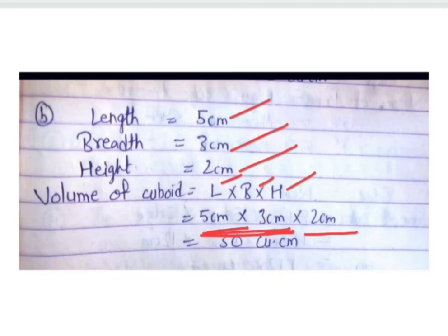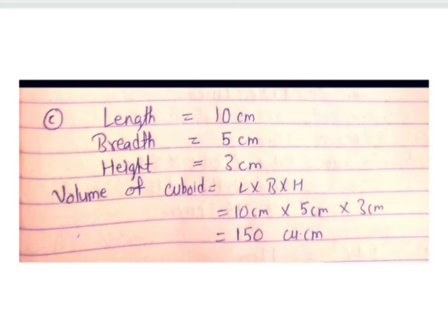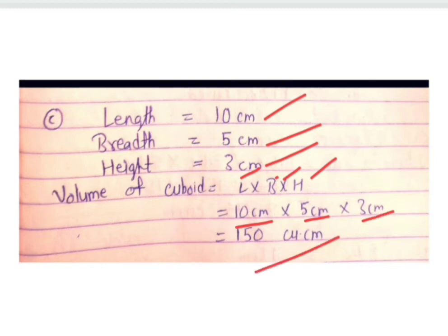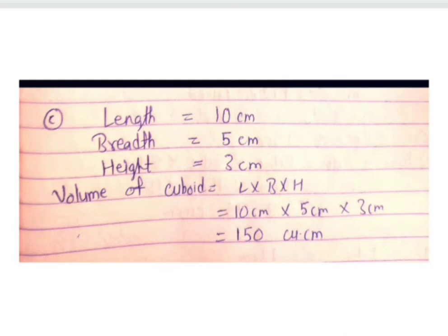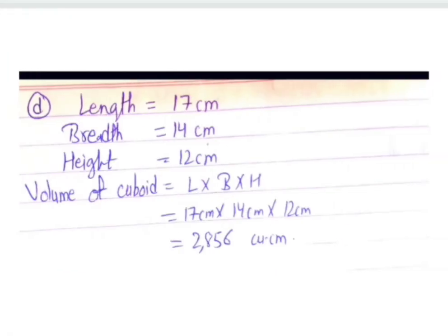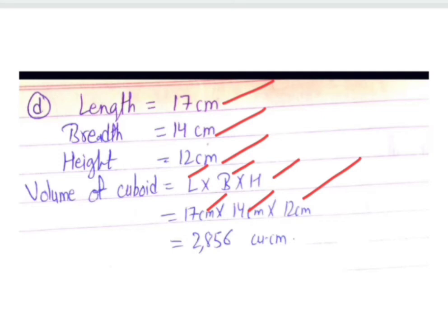In part C, length is 10 cm, breadth is 5 cm, height is 3 cm. Volume = 10 × 5 × 3 = 150 cubic centimeters. In part D, length is 17 cm, breadth is 14 cm, height is 12 cm. Volume = 17 × 14 × 12 = 2856 cubic centimeters.